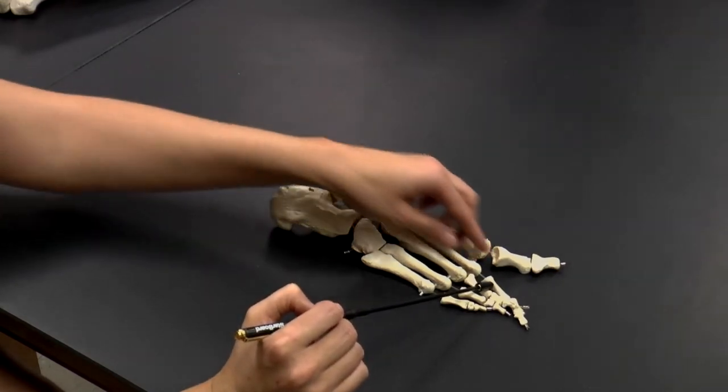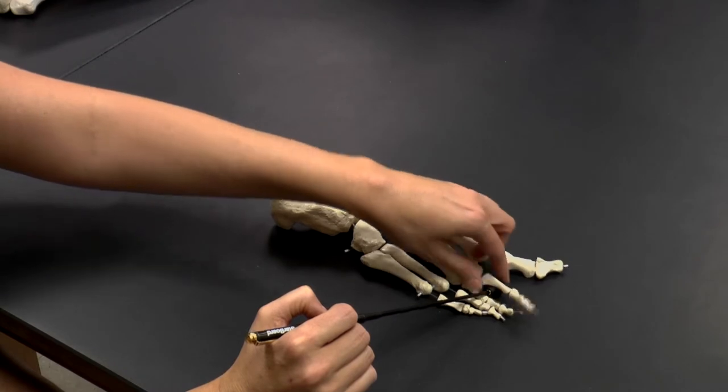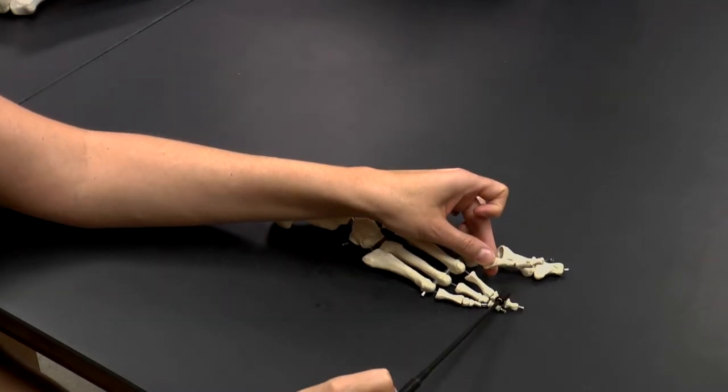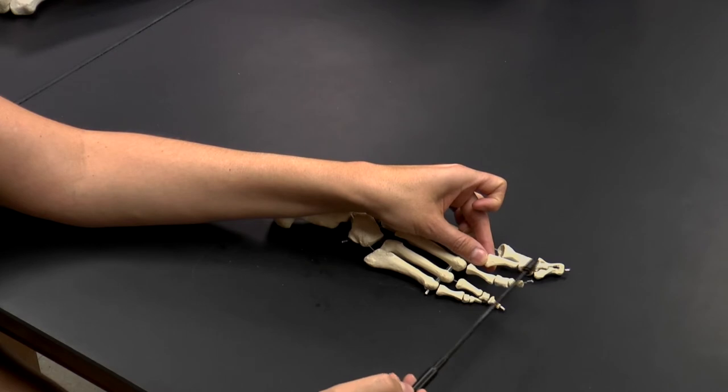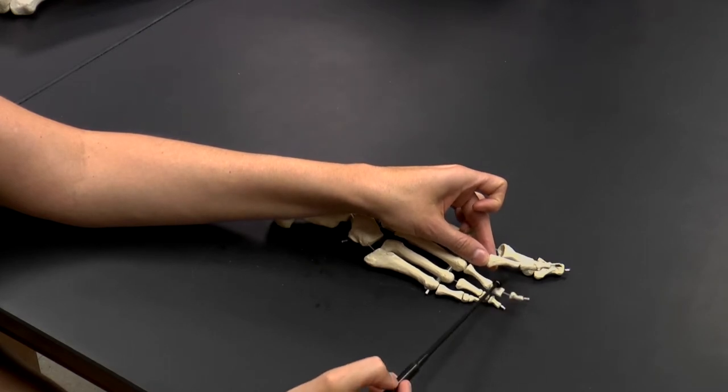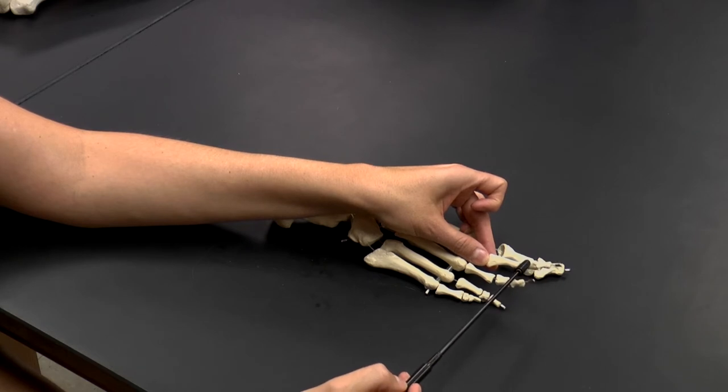And then for each of the other toes, this would be the next toe. And you can see that there are three phalanges, just like in our hand. We have our proximal, our distal, and between the two, we have our middle. And again, this is phalange number two.